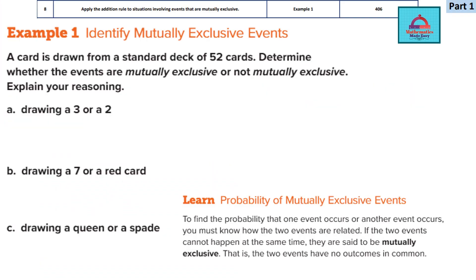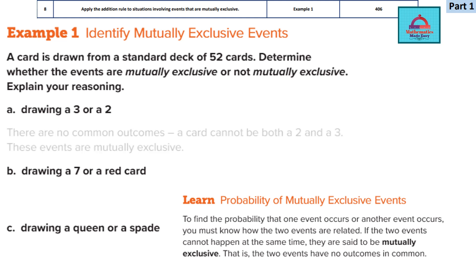In this video we solve learning objective 8, where you apply the addition rule to situations involving events that are mutually exclusive. I am taking a solved example — example 1 from your math book on page 406. This is a card problem: a card is drawn from a standard deck of 52 cards. You have to determine whether the events are mutually exclusive or not mutually exclusive, and also give your reason. There are 3 parts: A, B, and C.